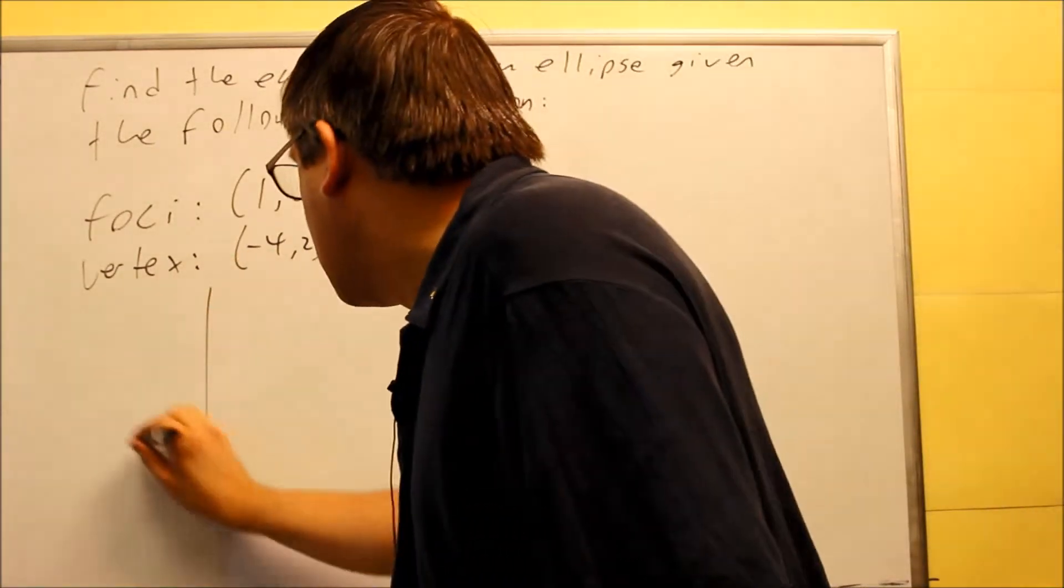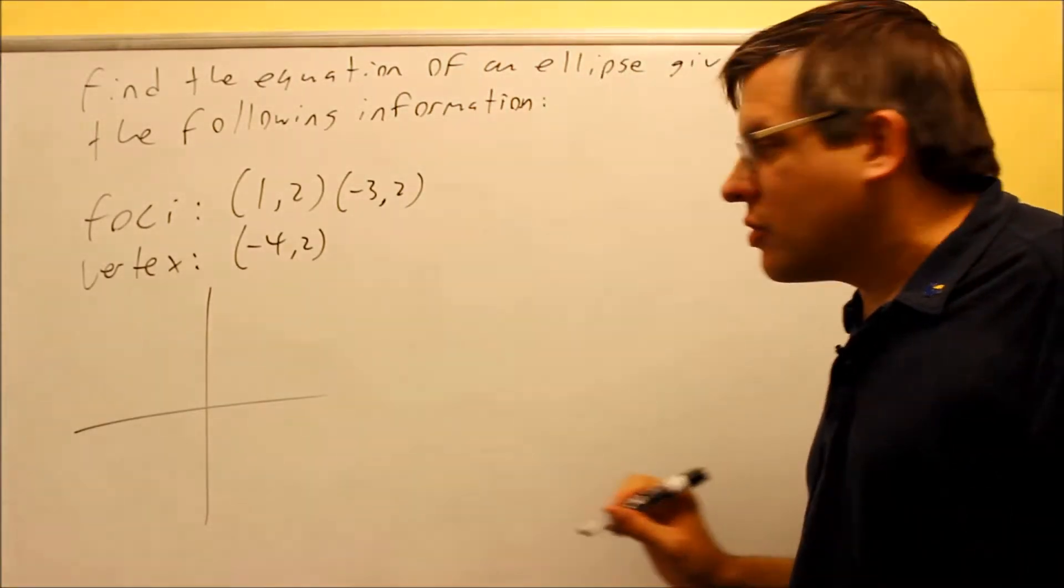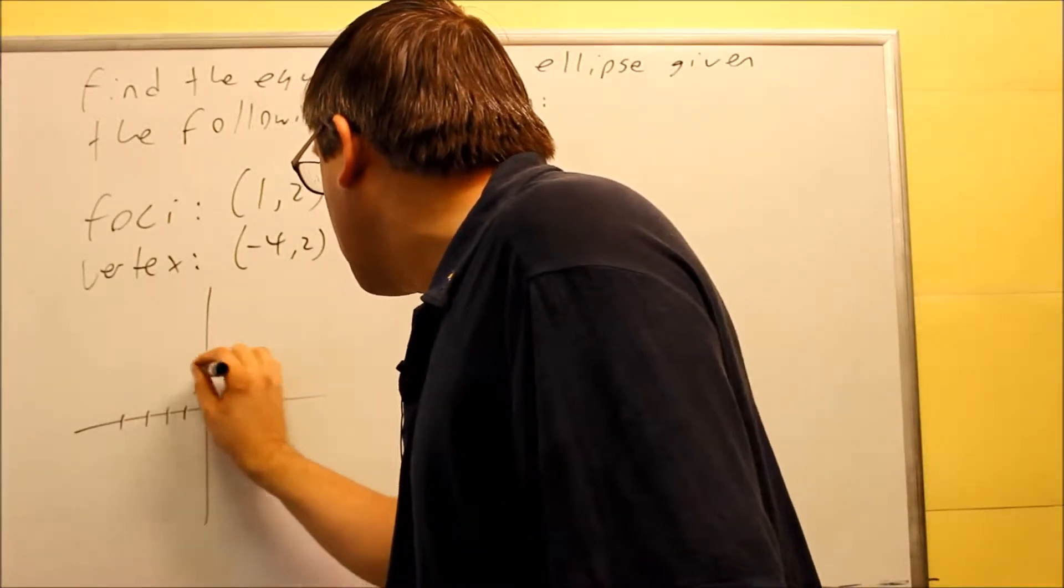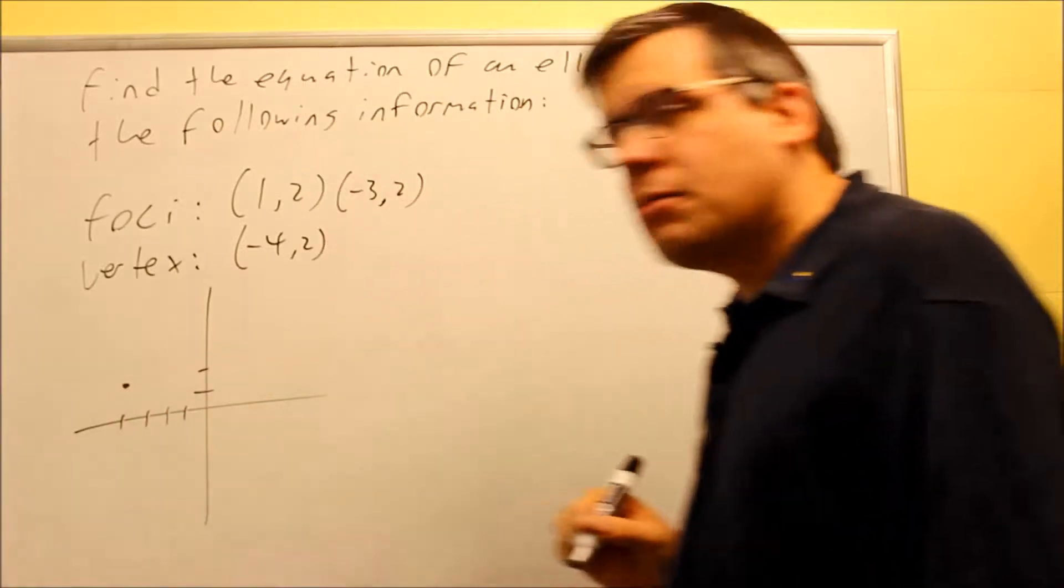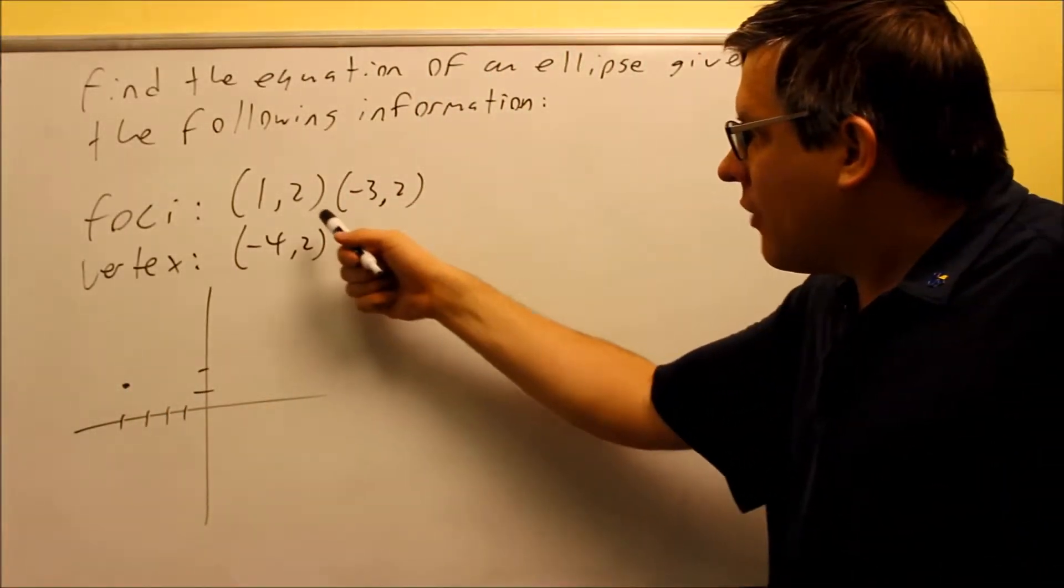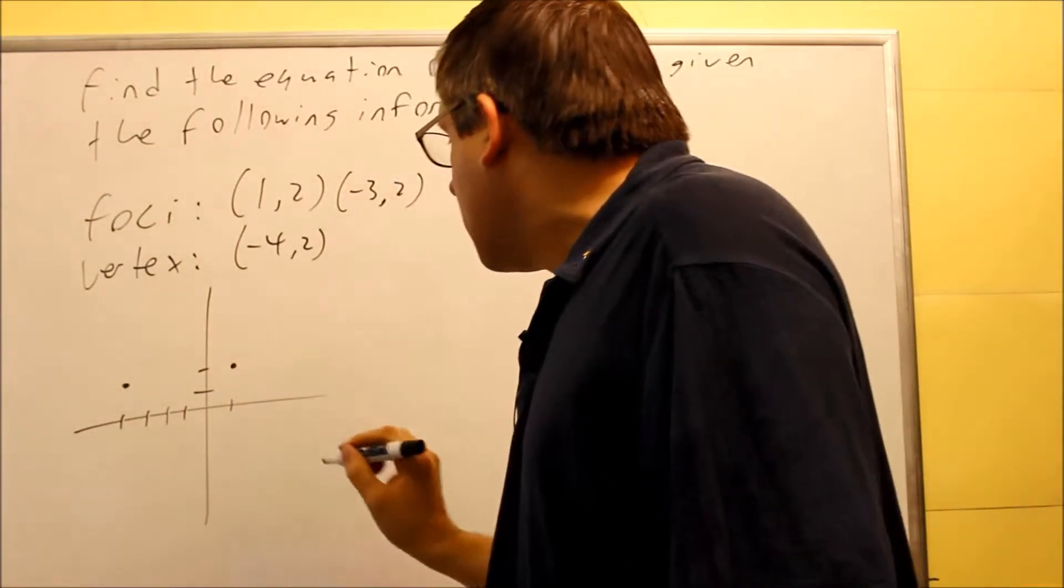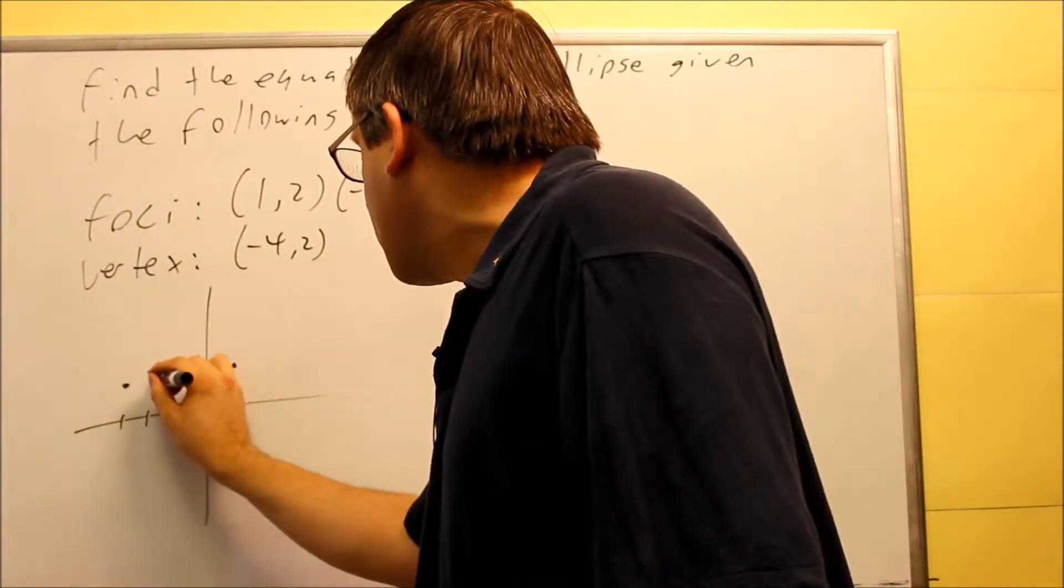So you should always begin by plotting the information. So negative 4, 2 would be right here. Next I have the foci at 1, 2. 1, 2 would be here. And negative 3, 2 would be here.